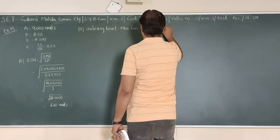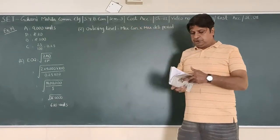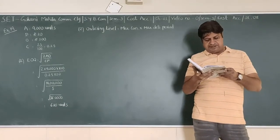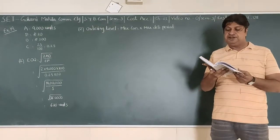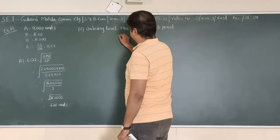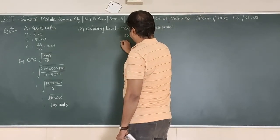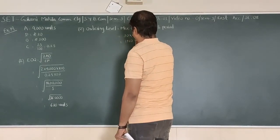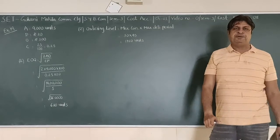Now for the ordering level, or reorder level. Maximum delivery period is given as 45 days, and maximum consumption is given as 30 units. So ordering level equals 30 into 45, which equals 1,350 units.